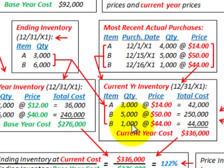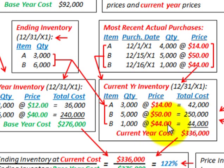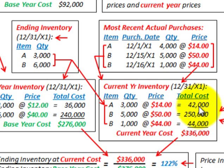The remaining 1,000 units come from the purchase made on 12/16/X1 at $44 per unit — the most recent price — so 1,000 times $44 gives us $44,000. Our total current year cost is $42,000 for Item A plus $250,000 plus $44,000 for Item B, giving a total current year cost of $336,000.